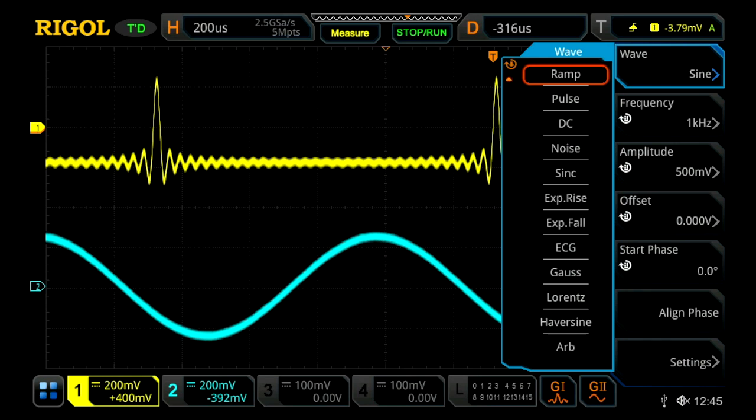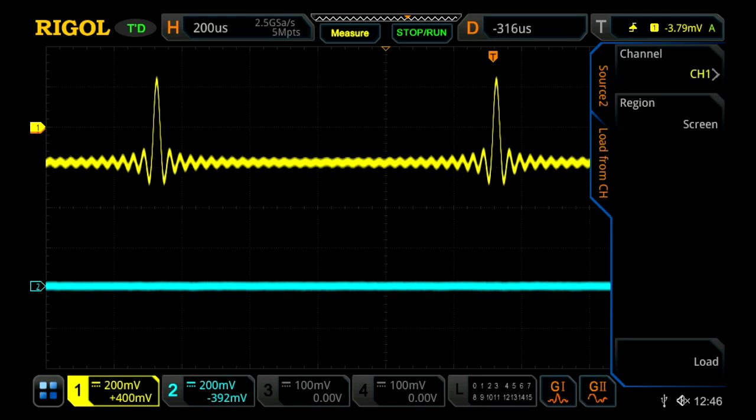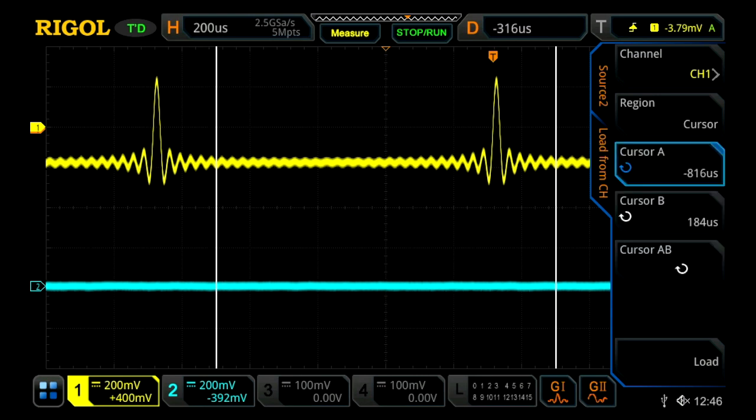We're actually going to go all the way down and we're going to select arbitrary and then from here this is where you can load a stored channel if you have a flash drive, you can create a function or edit one, or you can load one from a channel. So let's say load channel one on the channel two, so load the sync function in yellow onto channel two in blue.